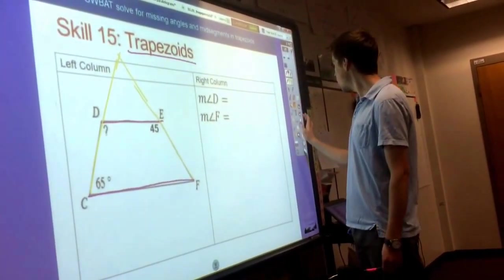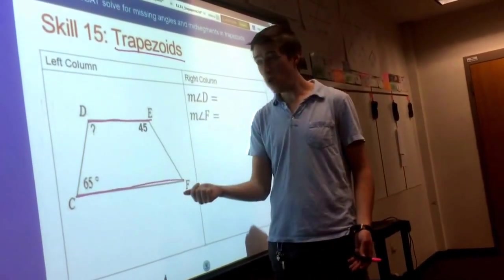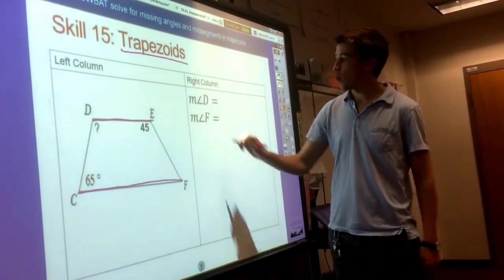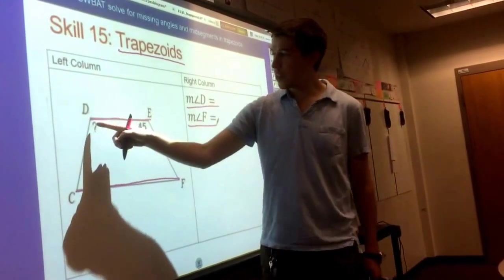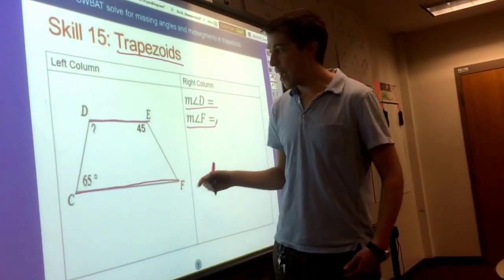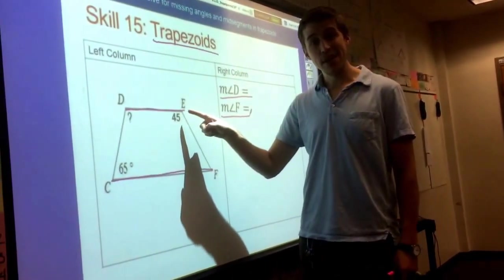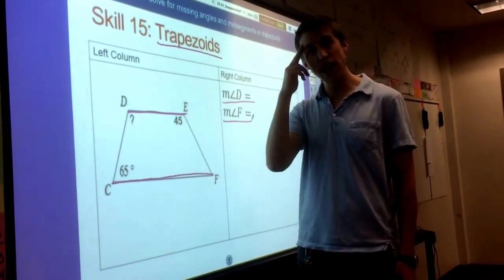Trapezoids only have one pair of parallel sides, so that changes what we know about the angles on the inside. So this question is asking, what is the measure of angle D and what is the measure of angle F? You can already see in this example, opposite angles aren't the same in a trapezoid. They're different, so we're going to have to change our logic.